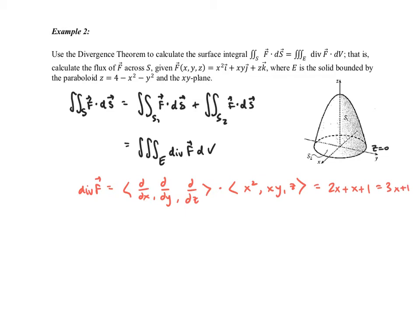So our triple integral over E will be 3x plus 1 dV. Let's take a look at this object that's formed here. We have to think back to chapter 12 because now we're trying to calculate a triple integral.